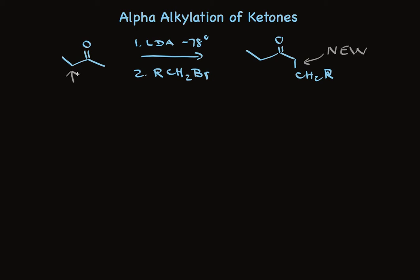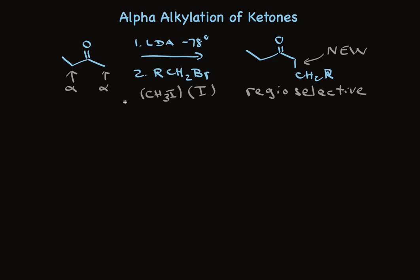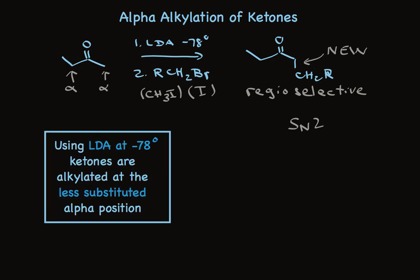There are two alpha positions, but the reaction is regioselective for the less substituted carbon. I've shown an alkyl bromide here; iodides are possible also, and other good leaving groups can be used. In addition to primary halides, we could use methyl iodide. So we have a variety of possibilities for the alkylating agent. We're using primary or methyl alkyl halides because this is an SN2 reaction. SN2 reactions just don't work well with secondary halides and don't work at all with tertiary halides.